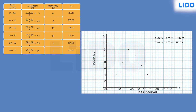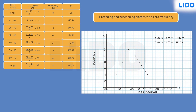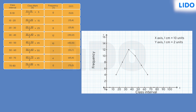The last step is to join the coordinates of consecutive classes one by one using a scale. We have been talking about a polygon all this time — a polygon is a multi-sided closed shape. But this is not a closed shape, so what should we do? We need to introduce preceding and succeeding classes with zero frequency. Having done that, we will find the class marks and coordinates of these classes in a similar way. Let's plot these points and connect them to complete the frequency polygon.